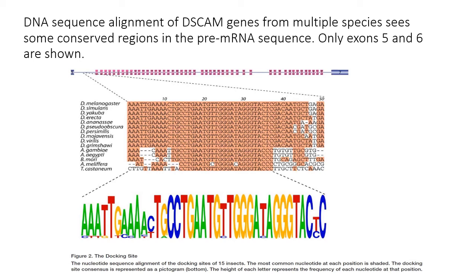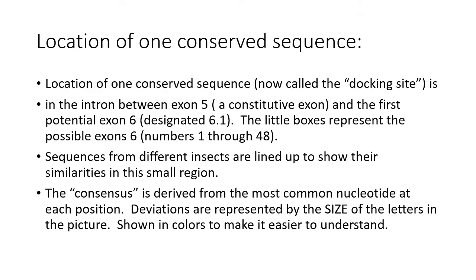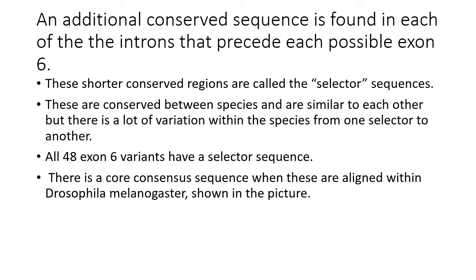For reasons that will become clear, we're going to call this the docking sequence. Each little box representing a possible exon 6 variant has, preceding it, a sequence called the selector sequence. These are found in each of the introns that precede each possible exon, are conserved between species, and are similar to each other even within a species. So all 48 possible exons of exon 6 have a selector sequence, although they're not identical to each other — there is a core consensus where we can align them.